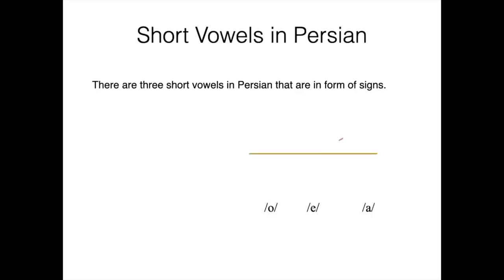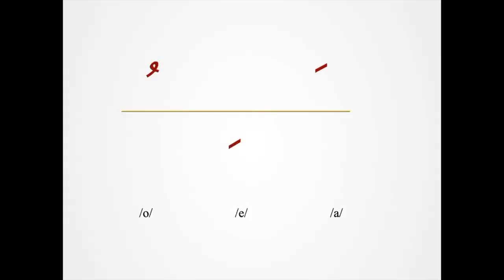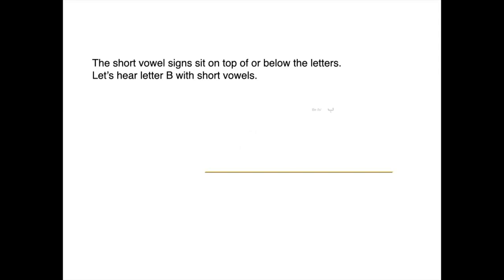There are three short vowels in Persian that are in the form of signs. Let's practice reading them. The short vowel signs sit on top of or below the letters.